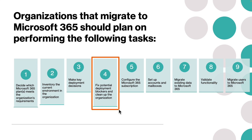The fourth step is to fix potential deployment blockers and clean up the organization. This is where you will clean up user accounts, get data and the network ready for your migration, and upgrade client software if necessary.